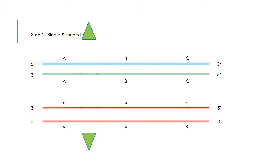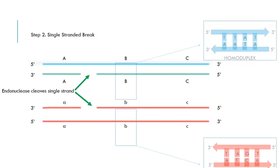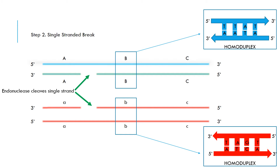An endonuclease cleaves a single-stranded break in both 3' to 5' strands. Note that each B region has a homoduplex region. This means all base pairs are matching, with a single base pair difference between the dominant and recessive genes.